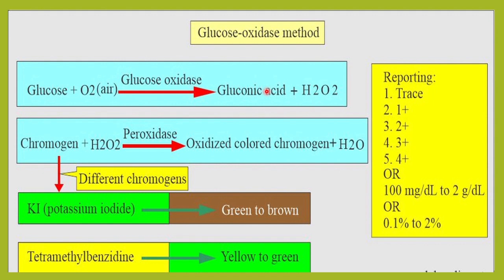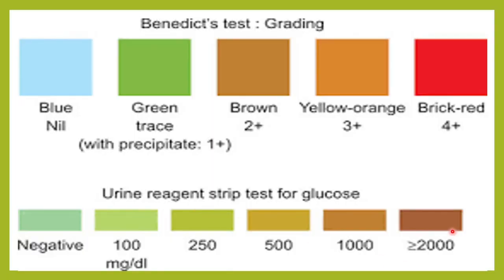When explaining results to a patient: if the report shows 4+ it means more than 2000 mg/dL of glucose is being excreted in the urine. Traces means around 100 mg/dL; a random urine is expected to be less than 30 mg/dL. 1+ means approximately 250 mg/dL, 2+ means approximately 500 mg/dL, and 4+ means more than 2000 mg/dL of glucose is being excreted in the urine.